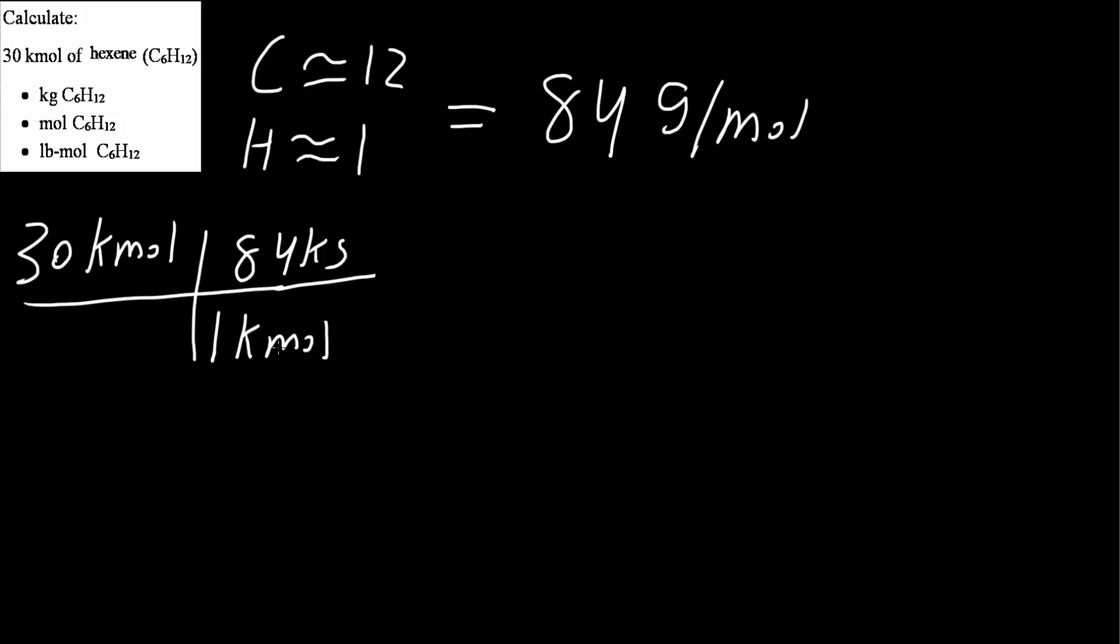And if we do kilomoles, we could say it's going to be kilograms per kilomole. These two are equivalent, and that's all we need to do for the first part. So we multiply 30 times 84, and we would get 2,520 kilograms.